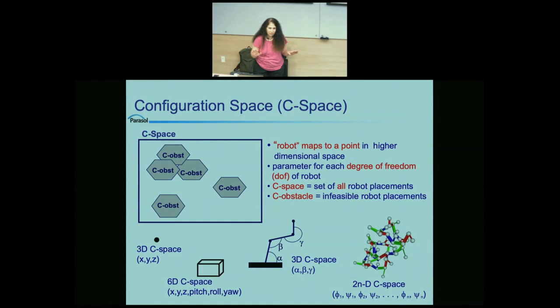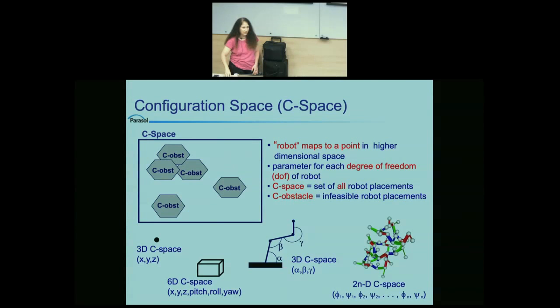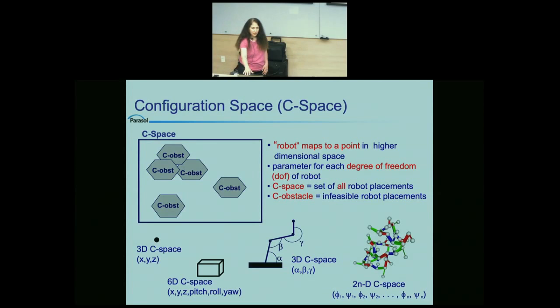The next thing we need to consider is whether a point in configuration space is actually valid. There are configurations where, for example, my arm would be through the desk — those would be in collision. We can define a configuration space obstacle corresponding to the desk: all the points in configuration space where I would be in collision with it. Similarly for the laptop. Points simultaneously in collision with both objects would be inside both configuration space obstacles.